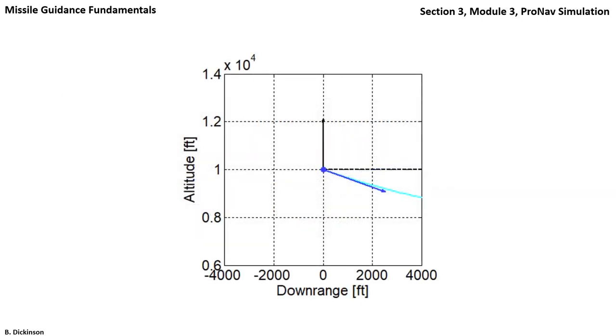This view follows the pursuer along its trajectory. The acceleration command is the black arrow, and it's perpendicular to the line of sight direction or the range vector, which is denoted by the black dashed line. The pursuer velocity vector is in dark blue with its initial heading error of minus 20 degrees. The light blue line is the trajectory of the pursuer.